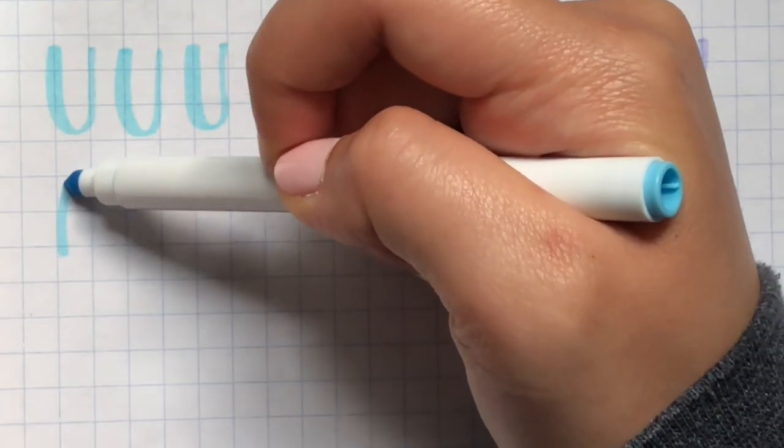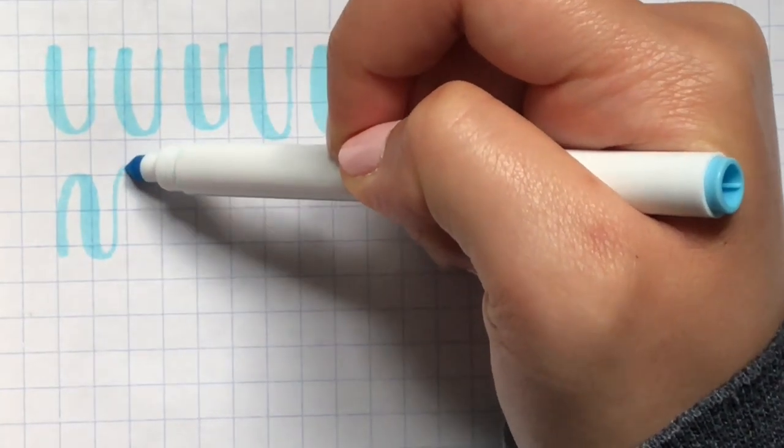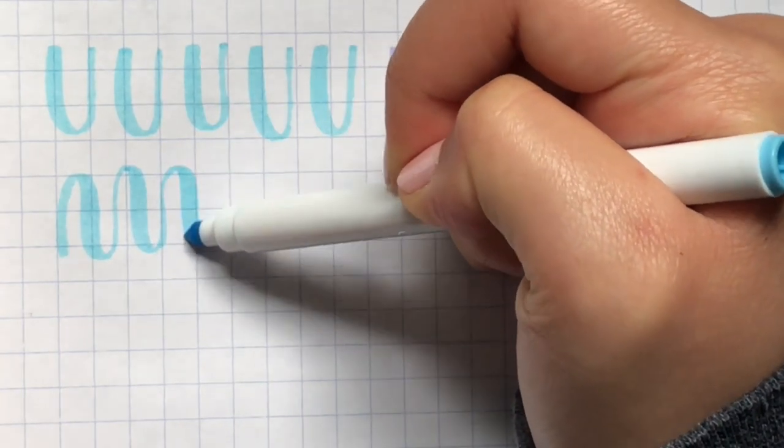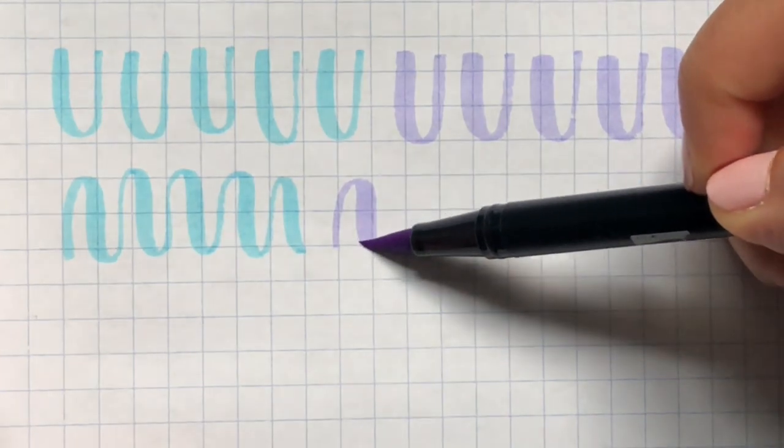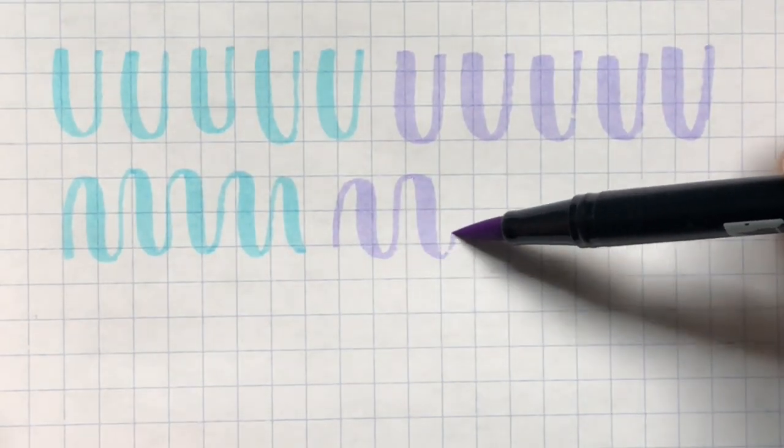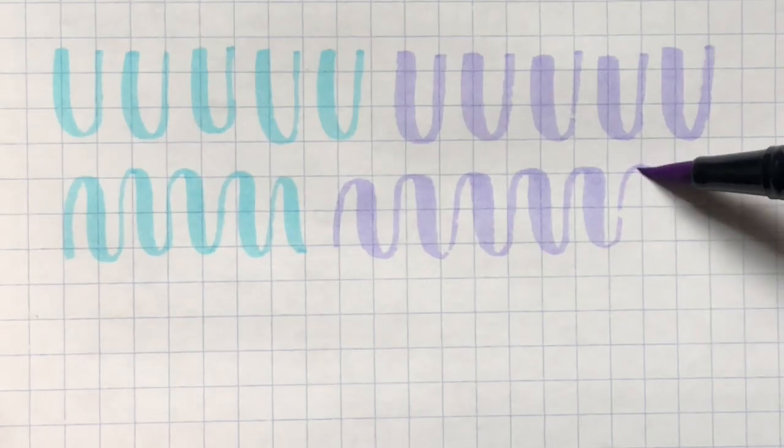Now we're going to move on to our next exercise and that's going to be a continuous squiggly line with those same thin up strokes and thicker down strokes. You really want to use the thicker part of your marker so you can get that thick down stroke.